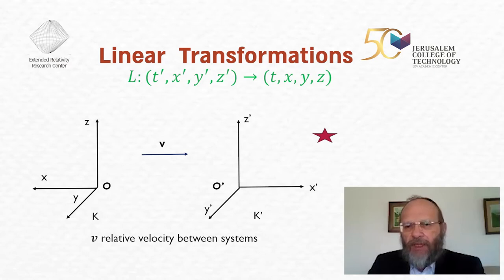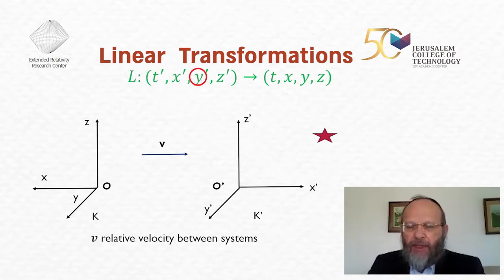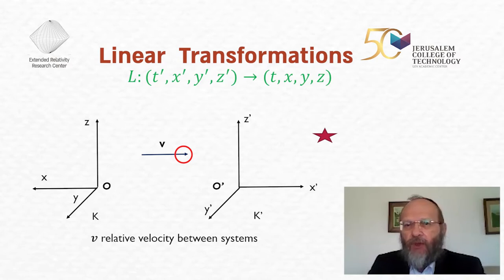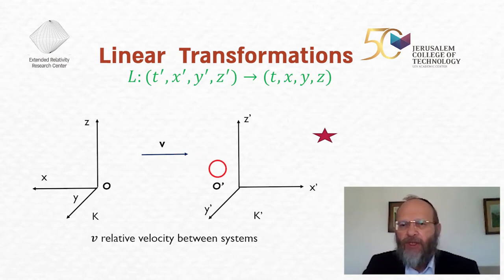Concretely, we have two frames: frame K and frame K-prime. We have some event with coordinates t-prime and x-prime in K-prime, and t, x, y, z in frame K. V is the relative velocity between them. I changed the axis orientation — not the usual configuration where x and x-prime go in the same direction — to make the configuration fully symmetric. The origin O-prime moves in the negative x direction with respect to system K.